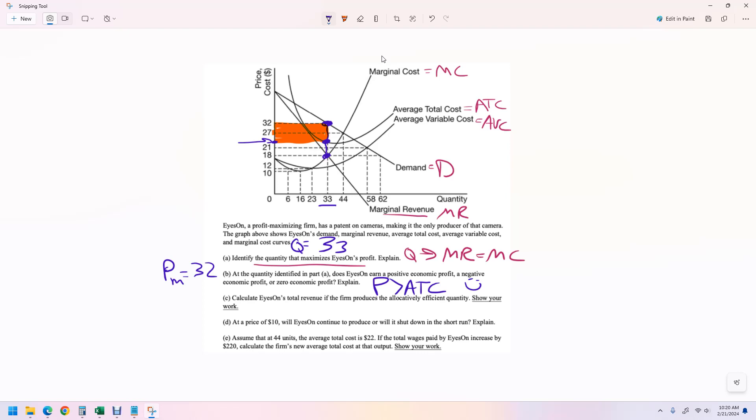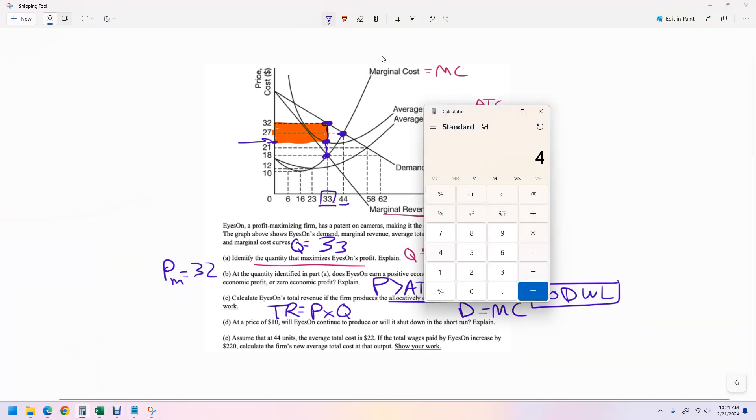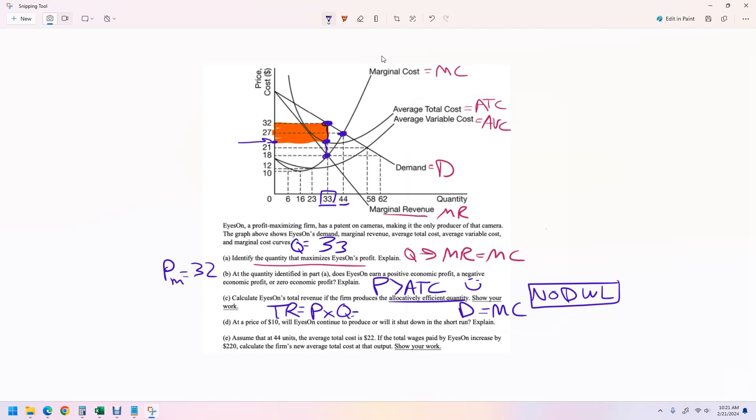Calculate total revenue if they produce the allocatively efficient quantity. Total revenue is a formula that you need to memorize. It's price times quantity. Allocative efficiency is where demand equals marginal cost. And the reason it's efficient is because there's no deadweight loss when we produce there. The monopolist here at its profit maximizing point is not allocatively efficient because we didn't produce the 44 units. So for that, we're just going to multiply 44 times 27. It is 1188. So in this case, it's 1188, and this is in dollars. That is total revenue if they produce 44 units.